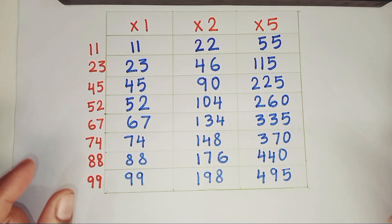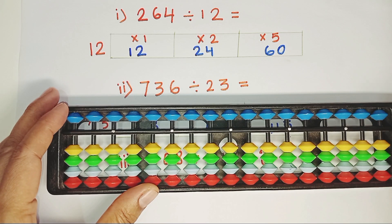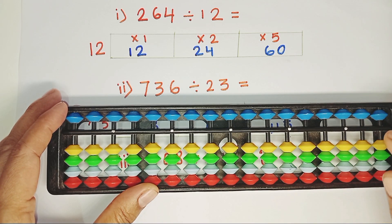I have made a few examples. Prepare your own multiplication table from 11 to 99 this way to master the Abacus division. Now, let's jump into some exciting examples.